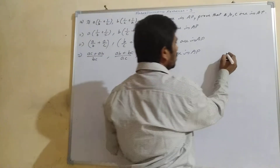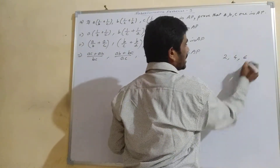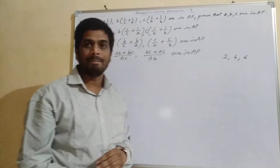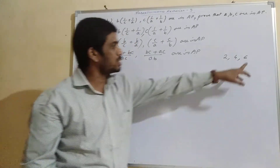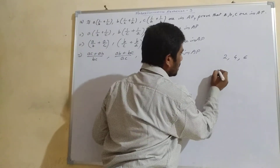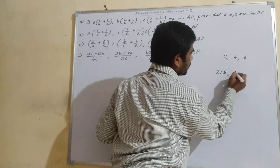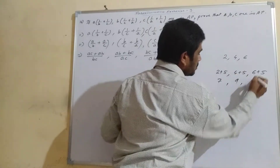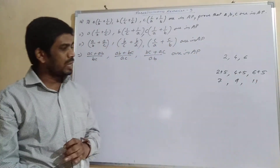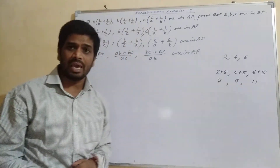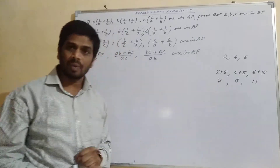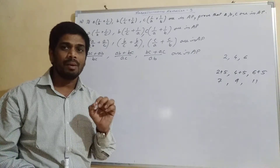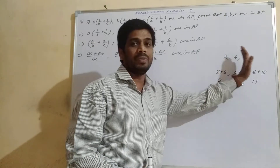Now suppose 2, 4, and 6 are in AP — being even numbers, the common difference is the same: 4 minus 2 is 2, and 6 minus 4 is also 2. Suppose we add 5 to every term, we get 7, 9, and 11. The resultant sequence is also in AP — 9 minus 7 is 2, and 11 minus 9 is also 2. This means you can add the same number to each term of an AP and it remains in AP.